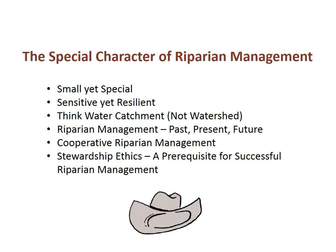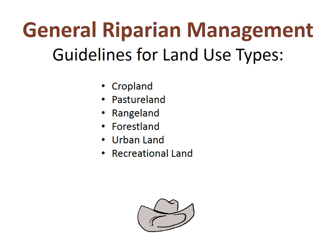Successful management of riparian areas is based on some important premises. First, we need to remember that they are small but special places — special pieces within the landscape that need special consideration in management plans. They are sensitive to changes, but are quite resilient. They are best thought of as key components of water catchments, not sheds. Their management has evolved to include the idea of cooperation along a shared resource, and a strong stewardship ethic is a prerequisite to successful management. Riparian management practices and techniques are determined in large part by the surrounding land use — agricultural land has different riparian issues than urban or recreational land.